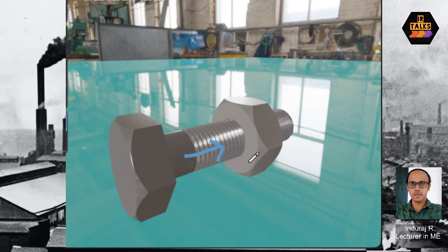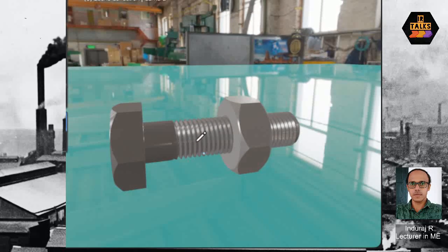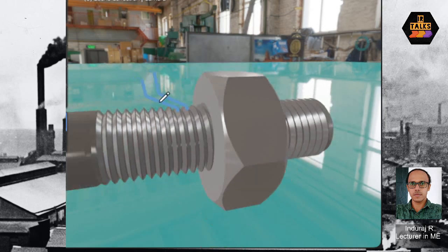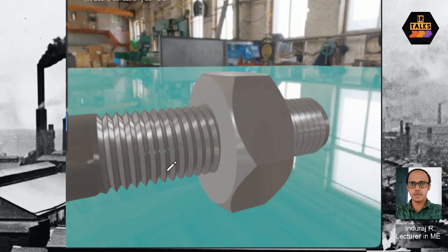For a single start thread, the lead and pitch are equal. With a multi-start thread, the lead can differ from the pitch. In the case of a double start thread, the lead equals 2 × pitch, and in general lead = n × pitch.